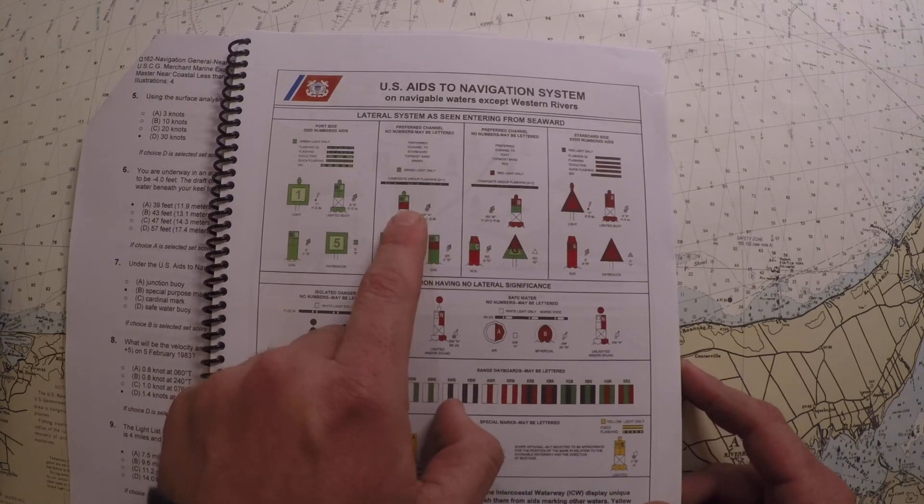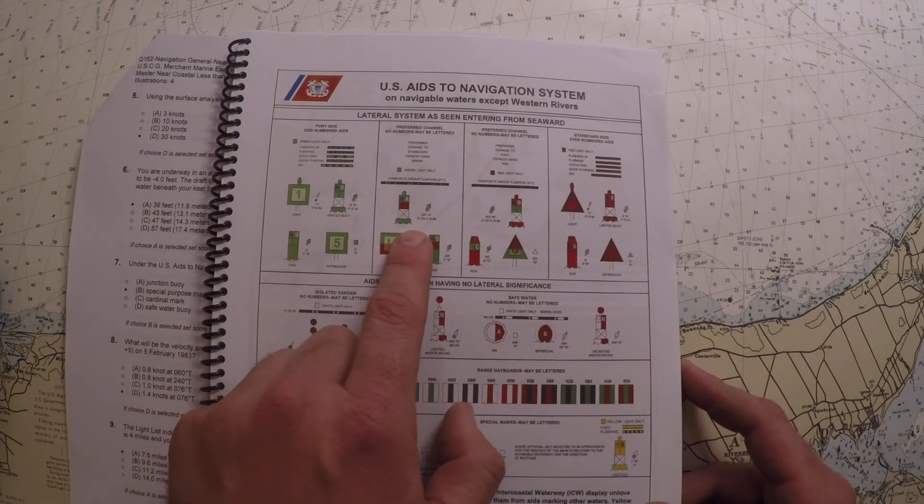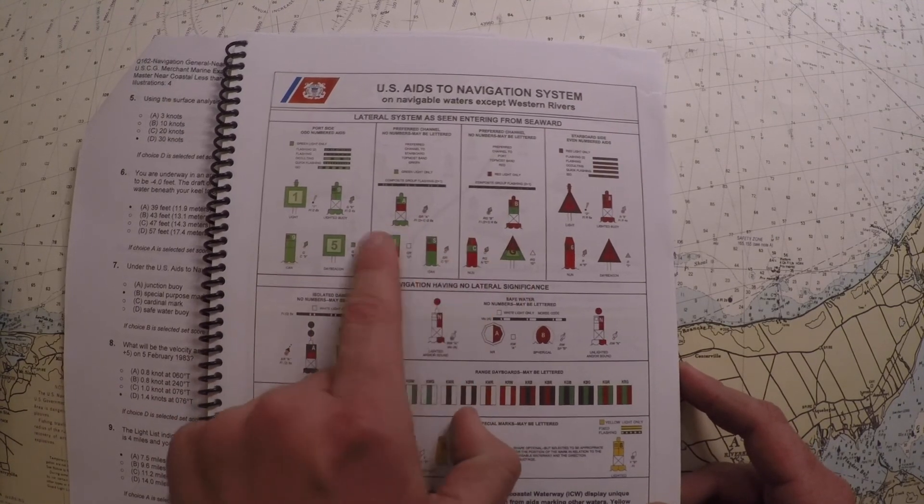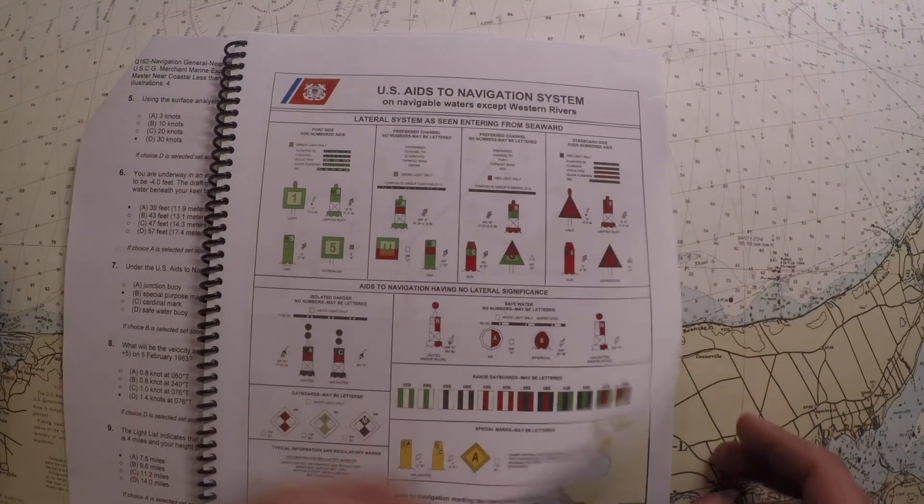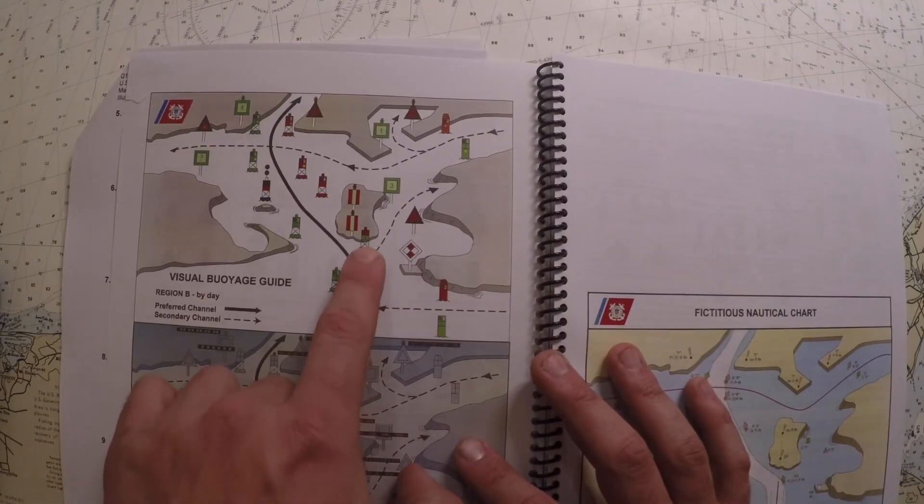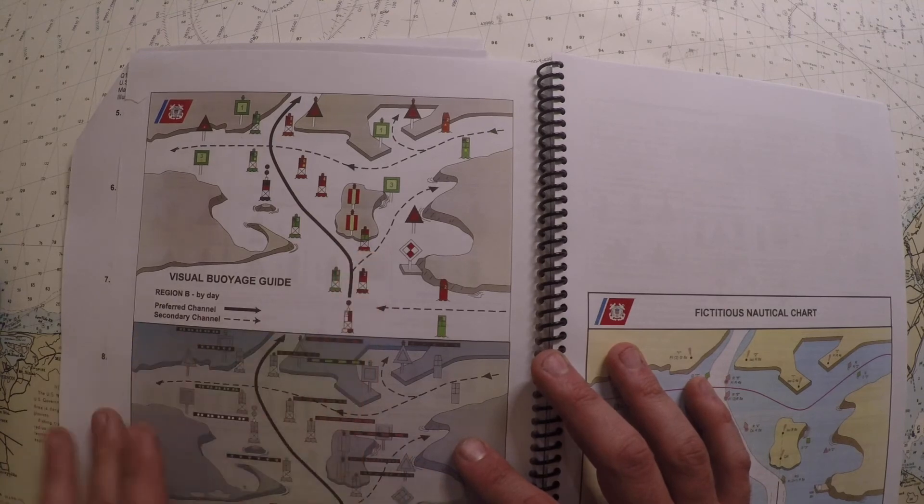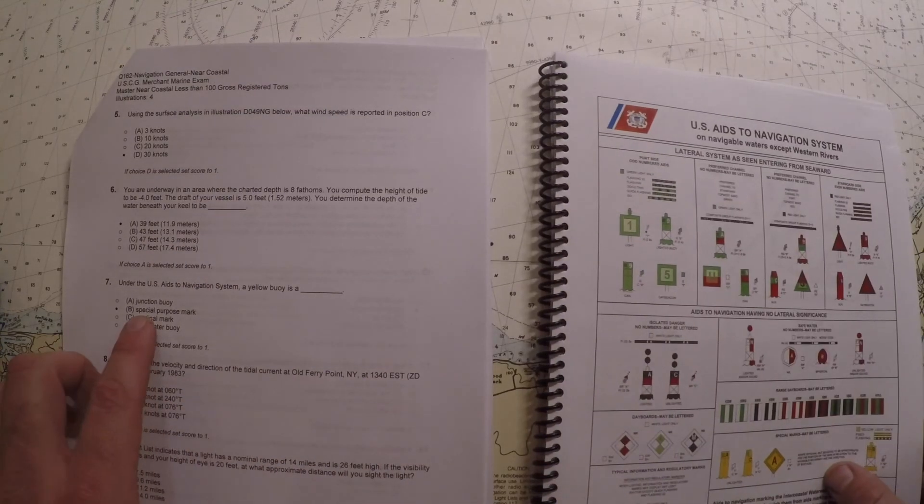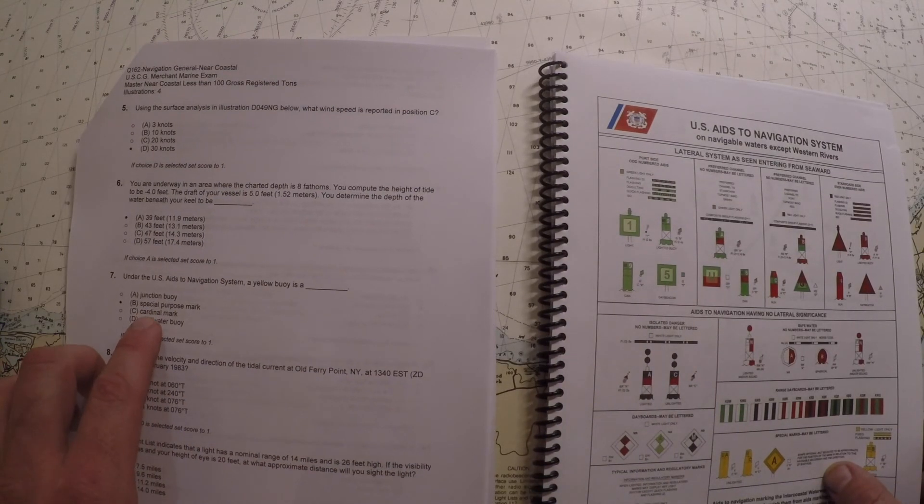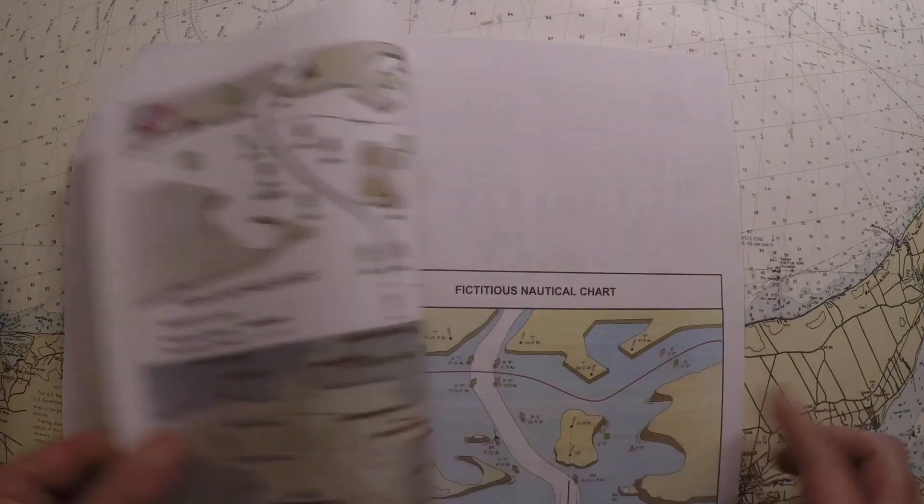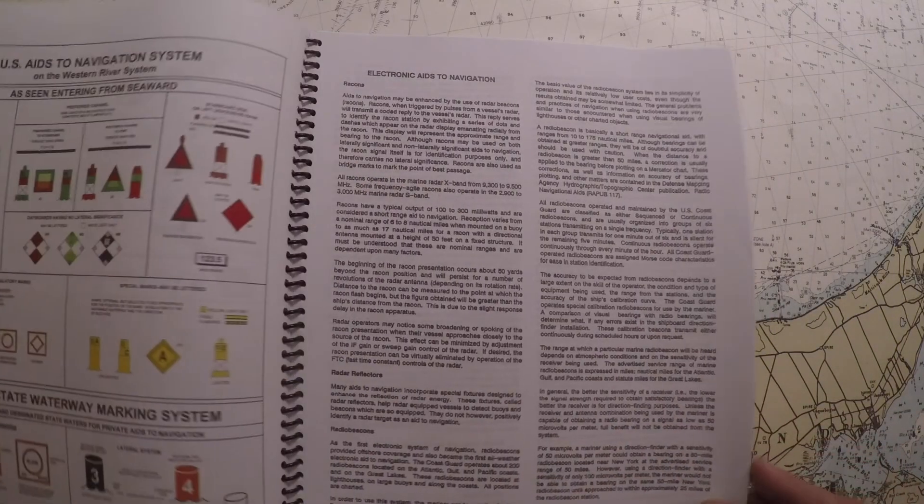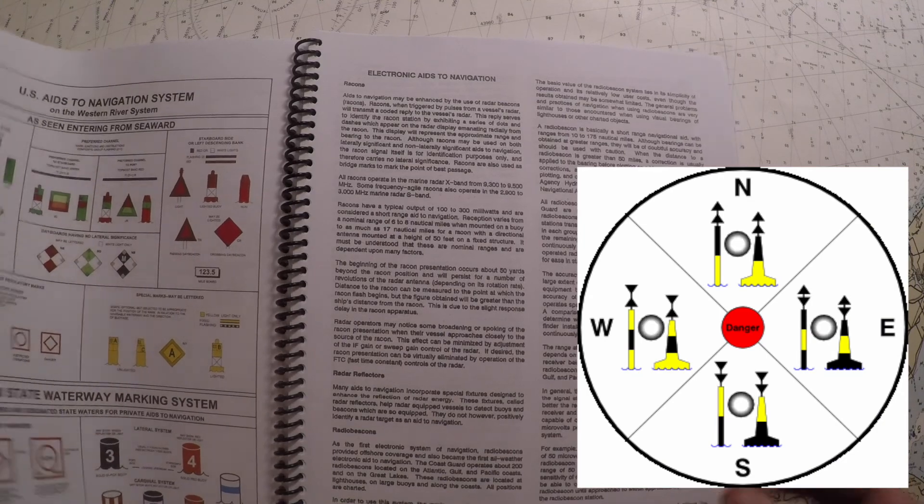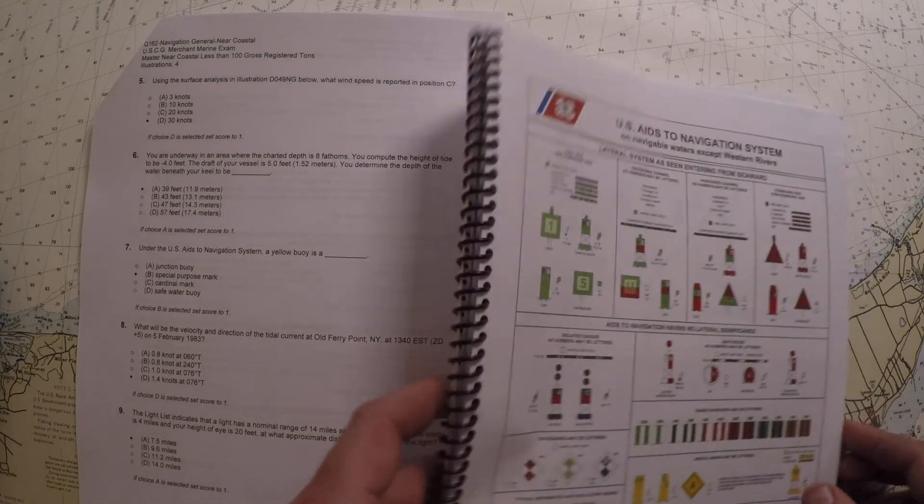But these are the junction buoys and they indicate which ways you can kind of travel. This might be a junction buoy here, for example. The next option is a cardinal mark, and they don't have that here in the Light List, but this is an illustration of a cardinal mark from the internet. And then the safe water buoy is the—